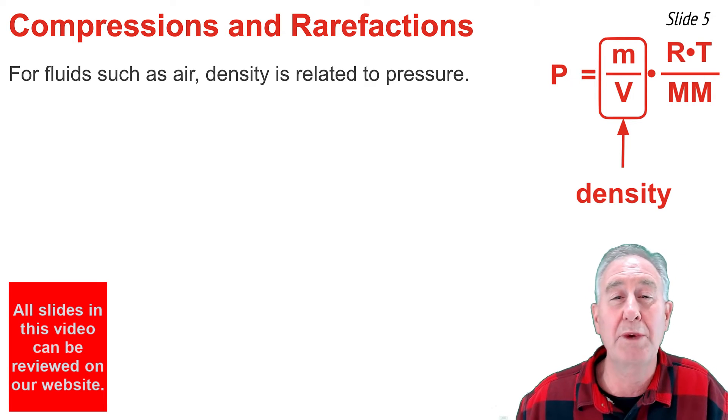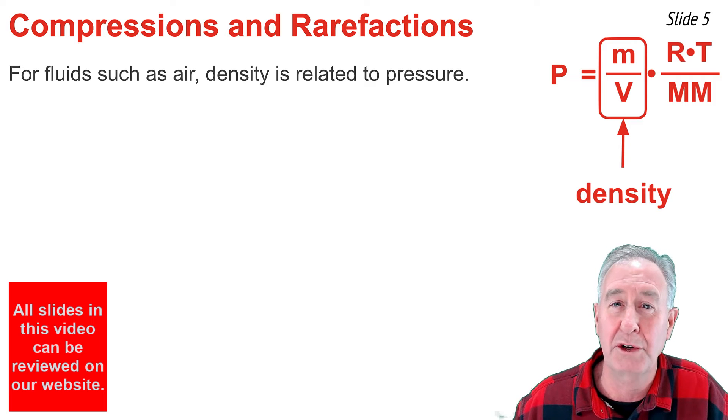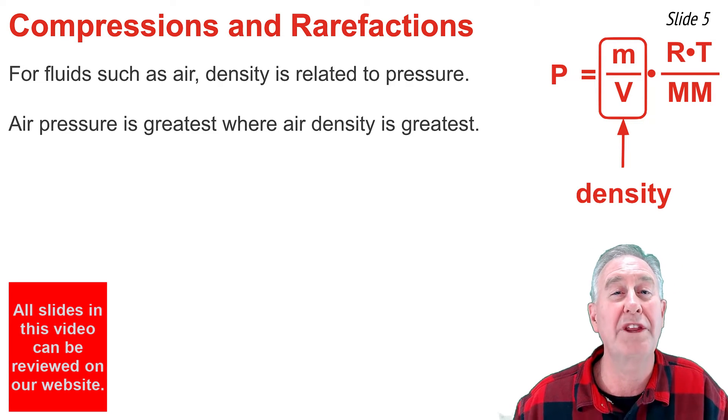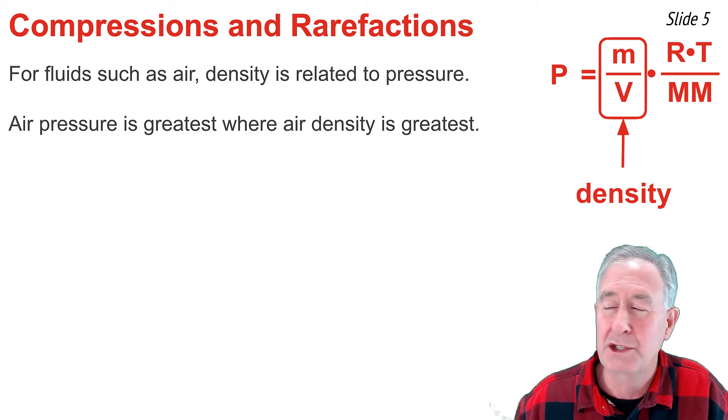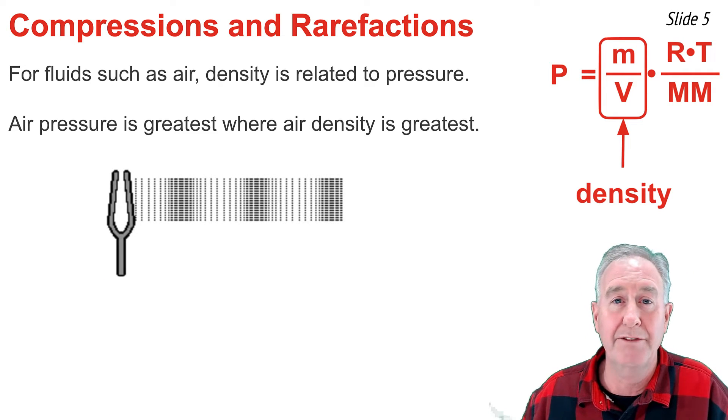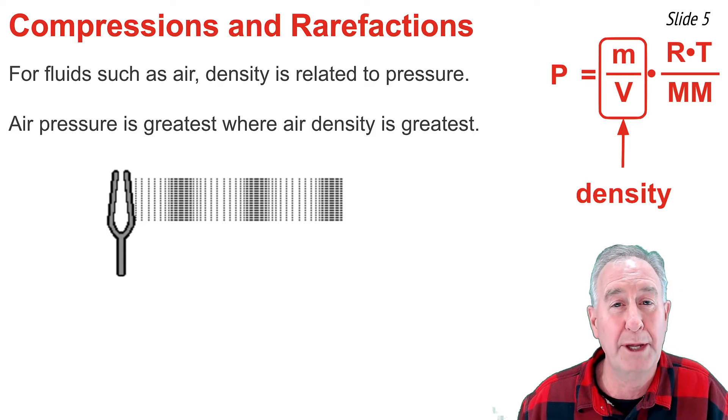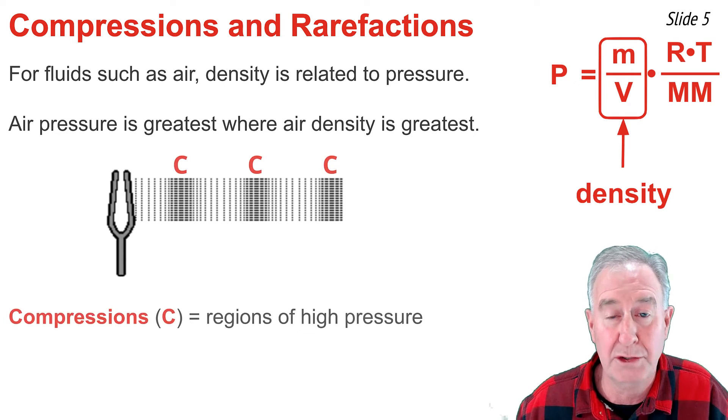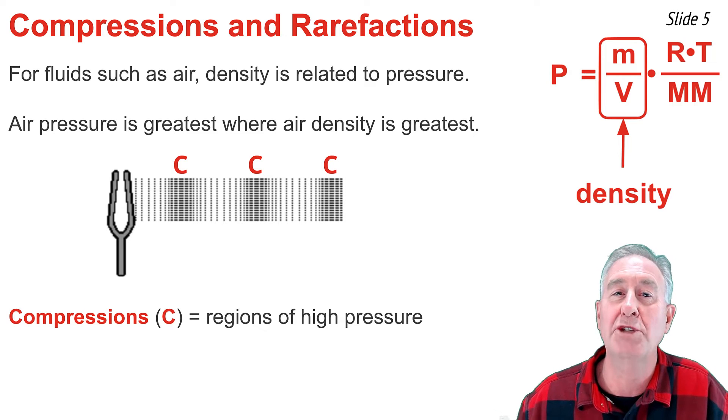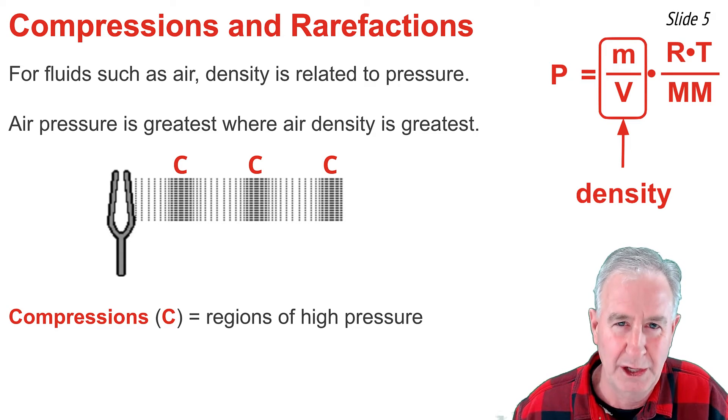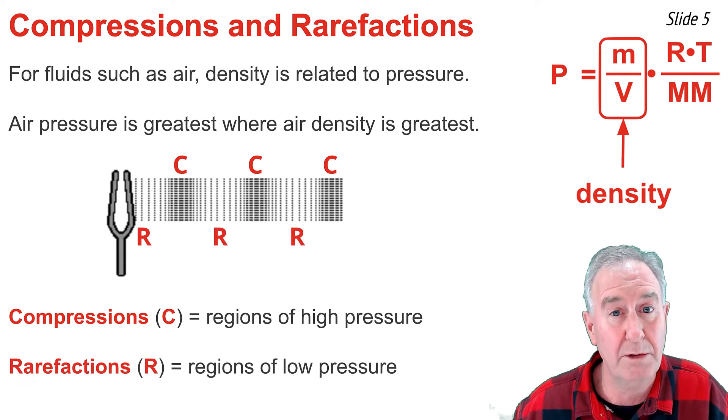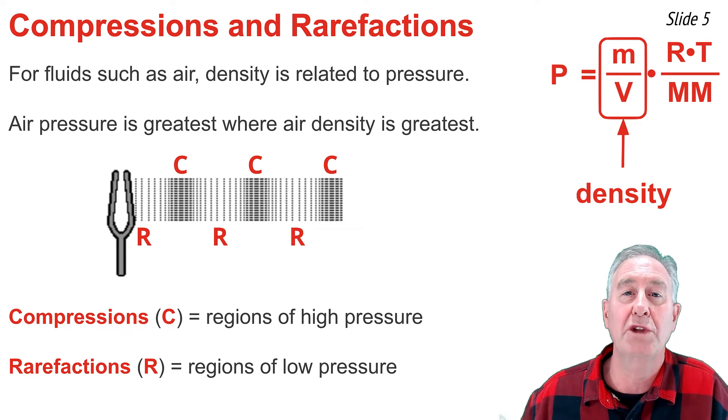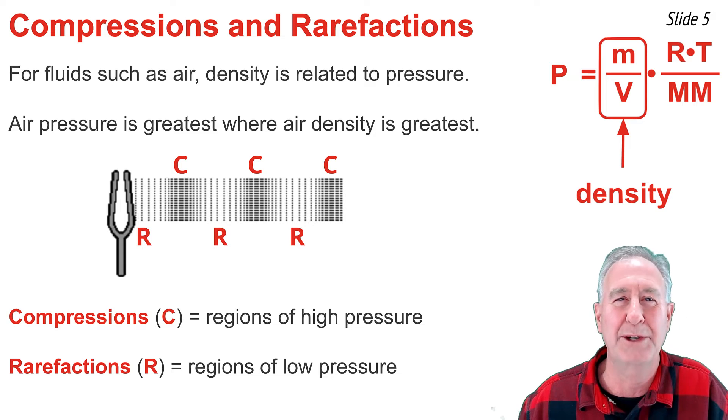And so from this equation, we can conclude that the pressure is related to the density, and the pressure will be greatest where the density is greatest. So when you see the familiar pattern of compressions and rarefactions propagating outwards from the source, you can identify those compressions or regions of high density as being regions of high pressure. And similarly, you can identify those regions that are called rarefactions as low density or low pressure regions.